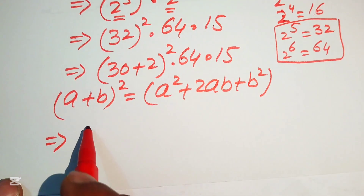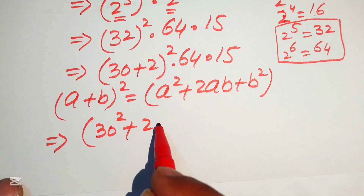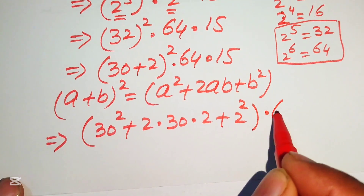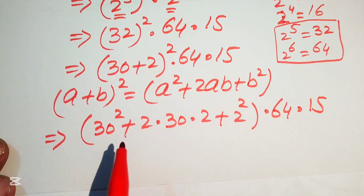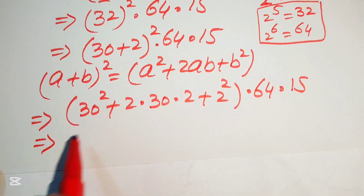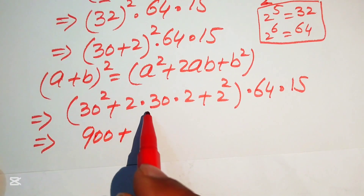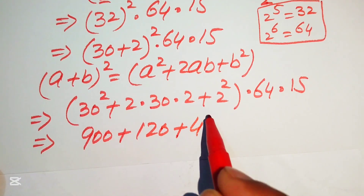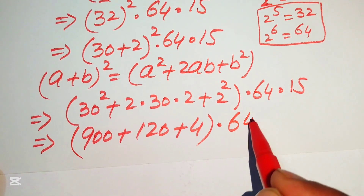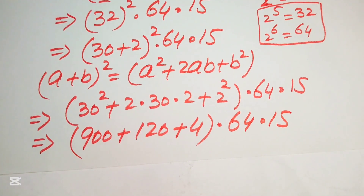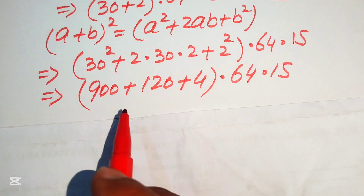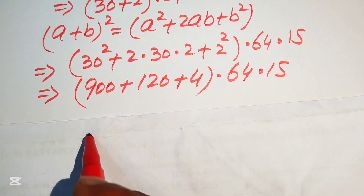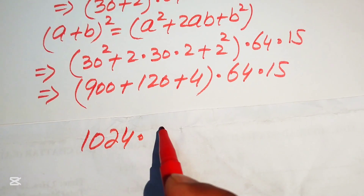Applying the formula, we write this as 30 squared plus 2 times 30 times 2 plus 2 squared, all multiplied by 64 multiplied by 15. This gives 900 plus 120 plus 4, multiplied by 64 and 15. Summing these values using traditional addition: 900 plus 120 plus 4 equals 1024, multiplied by 64 multiplied by 15.